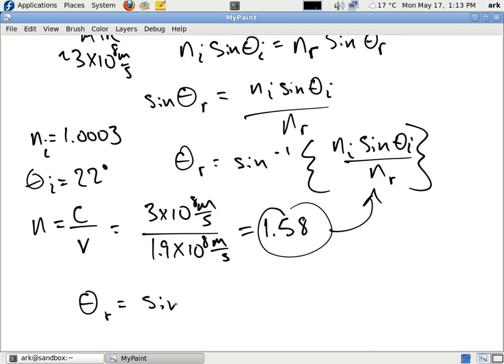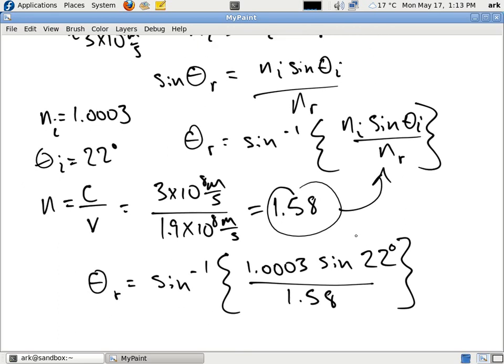And so we're going to go the inverse sine of air, index of refraction of air, times the sine of 22 degrees divided by 1.58. And that is going to give us a value of 13.7 degrees.